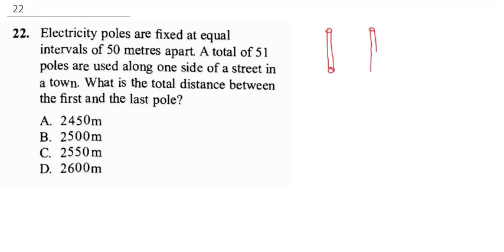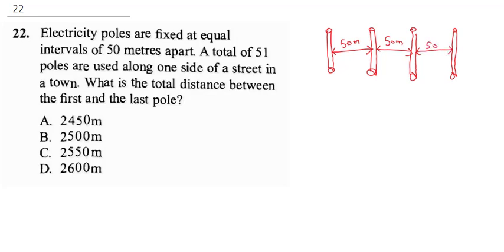Notice it says between the two poles the distance is 50 meters. There is another pole, and that interval is also 50 meters. Having established that all the pole intervals are 50 meters, up to the 51st pole they are all 50 meters. The question asks for the total distance between the first and the last pole. Notice this is distance one, this is distance two, and this is distance three.